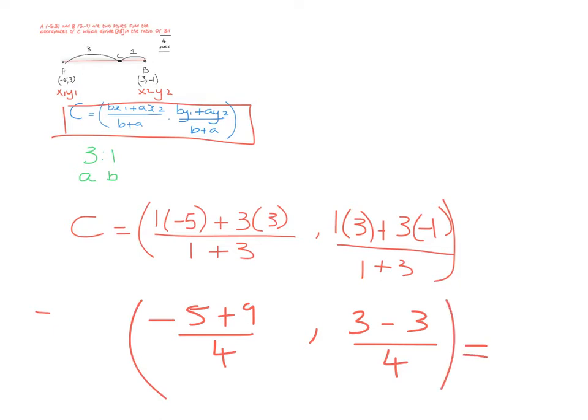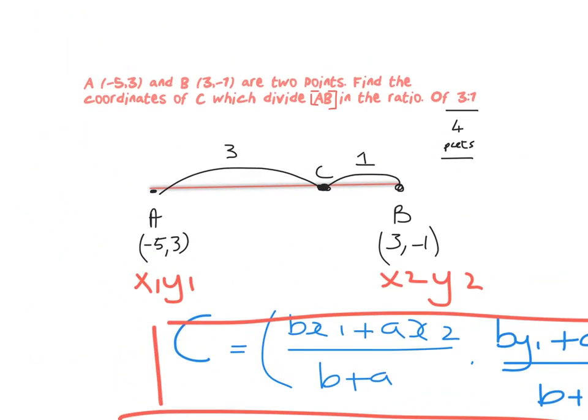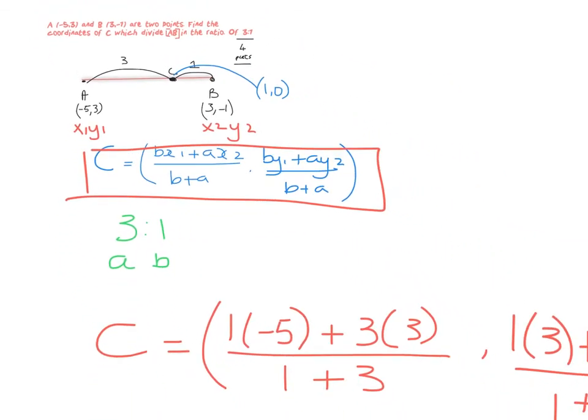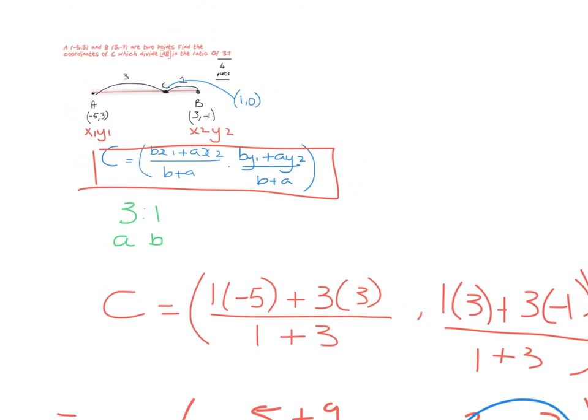If you were to break that down even further, you'd get that the point C is equal to (1, 0). I got my 1 from this and this will give me 0. So that is the point C: (1, 0). That's our first look at the divisor using a line segment.